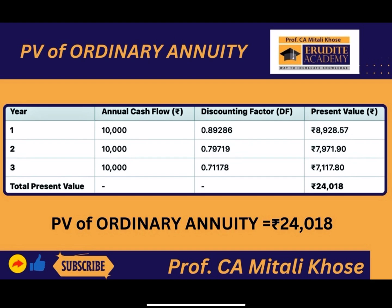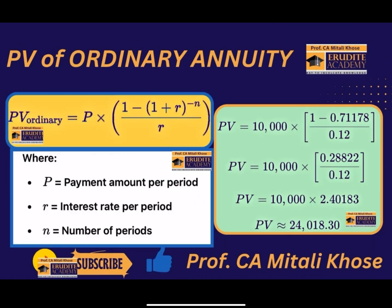This can also be calculated using a formula. For calculating this, we will first take the discounting factor of year 3 and reduce it from 1, then divide it by the rate of return, and eventually multiply everything with annual cash flows. The present value will be approximately 24,000 rupees. There can be a minor rounding difference.